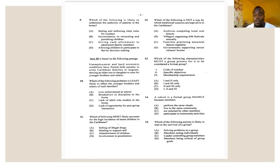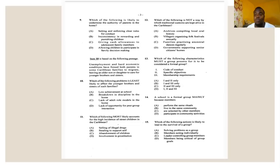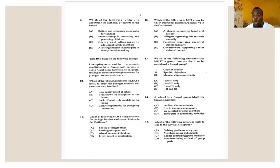Number thirteen says: which of the following characteristics must a group possess to be considered a formal group — code of conduct, specific objectives, and membership requirements? All of these are required. A formal group has steps to become a member, a code of conduct with rules and regulations, sanctions if rules are broken, and specific objectives because all formal groups have a specific purpose. The answer for number thirteen is D — all of the above, one, two, and three.